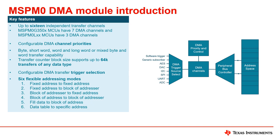The DMA module has six addressing modes. The addressing modes for each DMA channel can be configured independently. For example, channel 0 can transfer between two fixed addresses, while channel 1 can transfer between two address blocks.